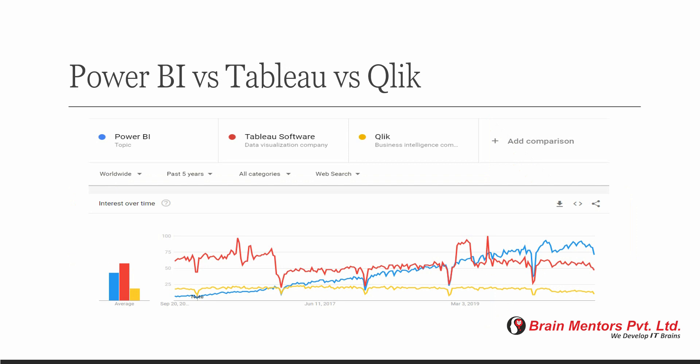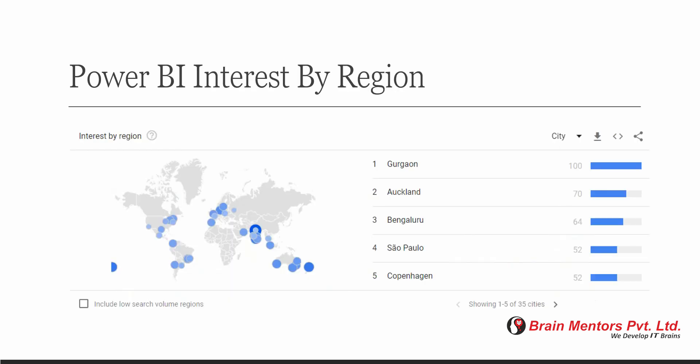There is a comparison between Power BI, Tableau, and Qlik. You can see that Power BI is the most used tool currently. In 2020, 2021, and upcoming years, Power BI is becoming more and more popular because it's a beginner-friendly tool, while Tableau is more of an advanced tool. Looking at Power BI interest by region, in India — particularly Gurgaon and Bangalore — it is used a lot, along with Auckland, Copenhagen, and South Palo. These are the top five cities where Power BI is heavily used.